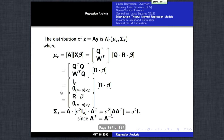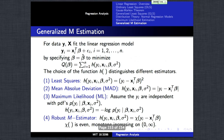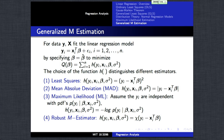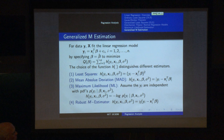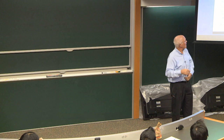Let's finish up on estimation by talking about generalized M-estimation. We estimate unknown parameters by minimizing a function q of beta, which is a sum of evaluations of another function H for each individual case. Choosing H with different functional forms defines different estimators. When H is simply the square of the residual, that leads to least squares and maximum likelihood estimation.